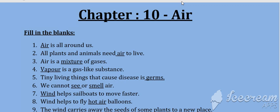Fill in the blanks. Air is all around us. All plants and animals need air to live. Air is a mixture of gases. Vapor is a gas-like substance. Tiny living things that cause disease are germs. We cannot see or smell air.